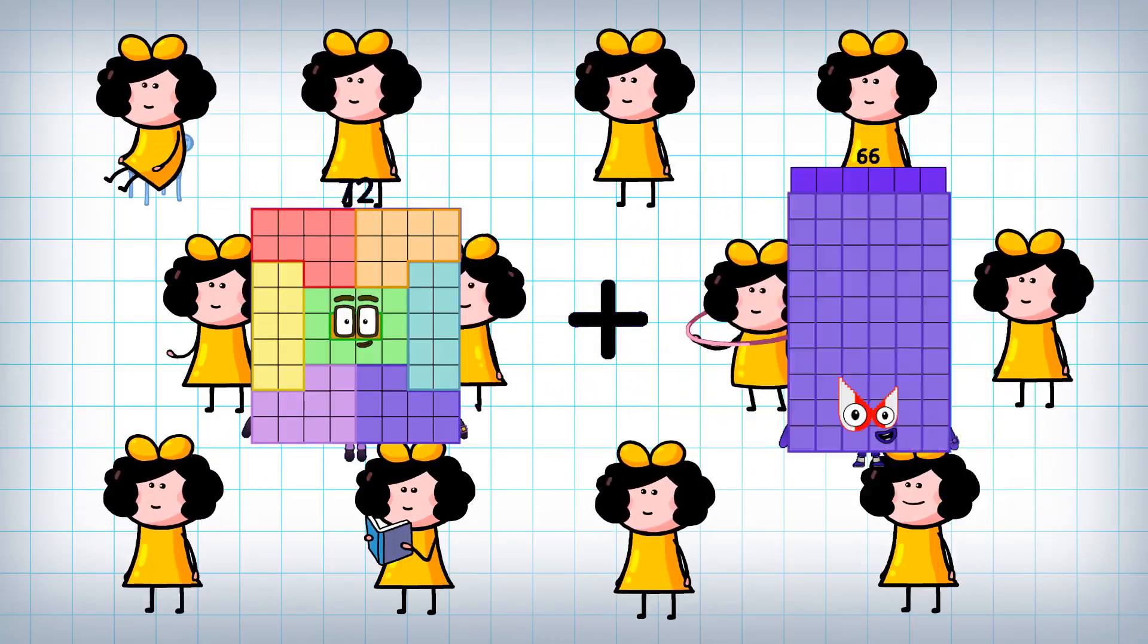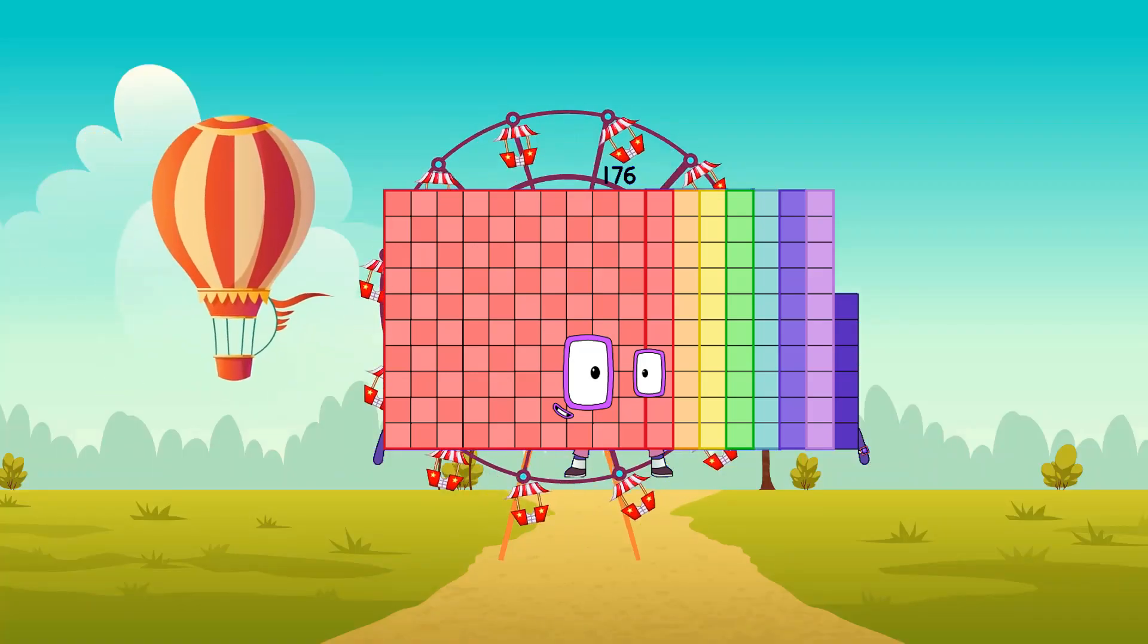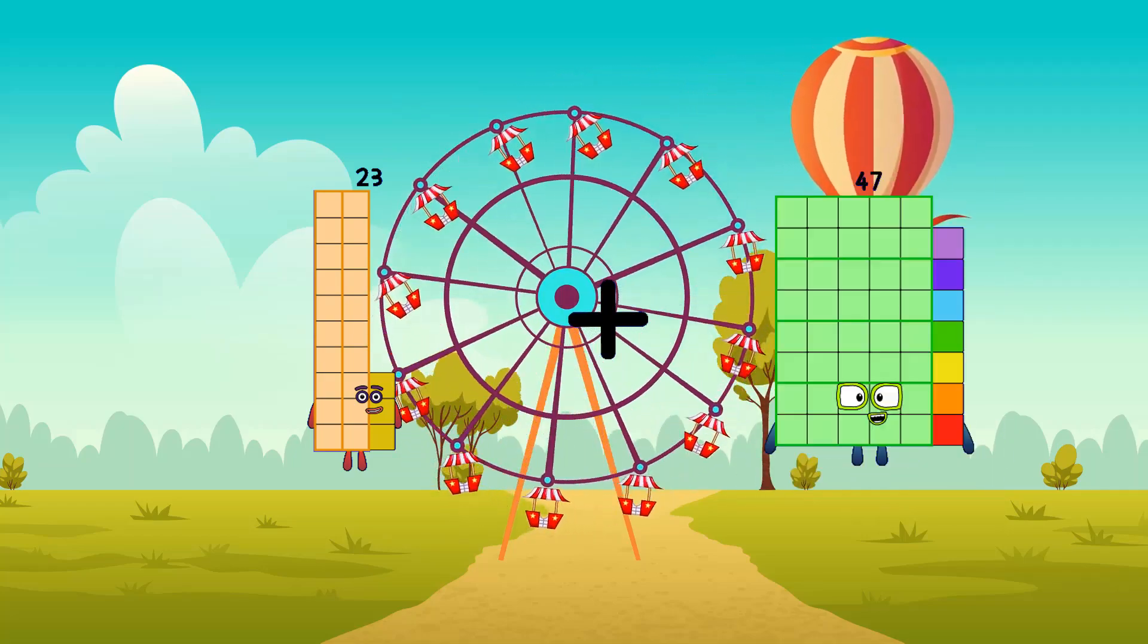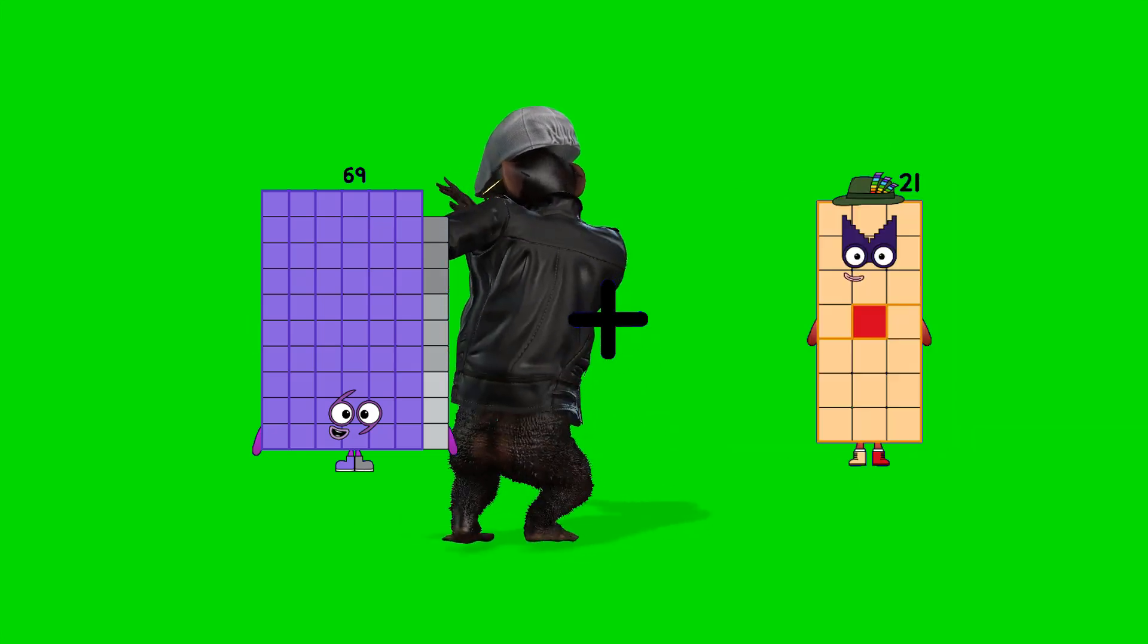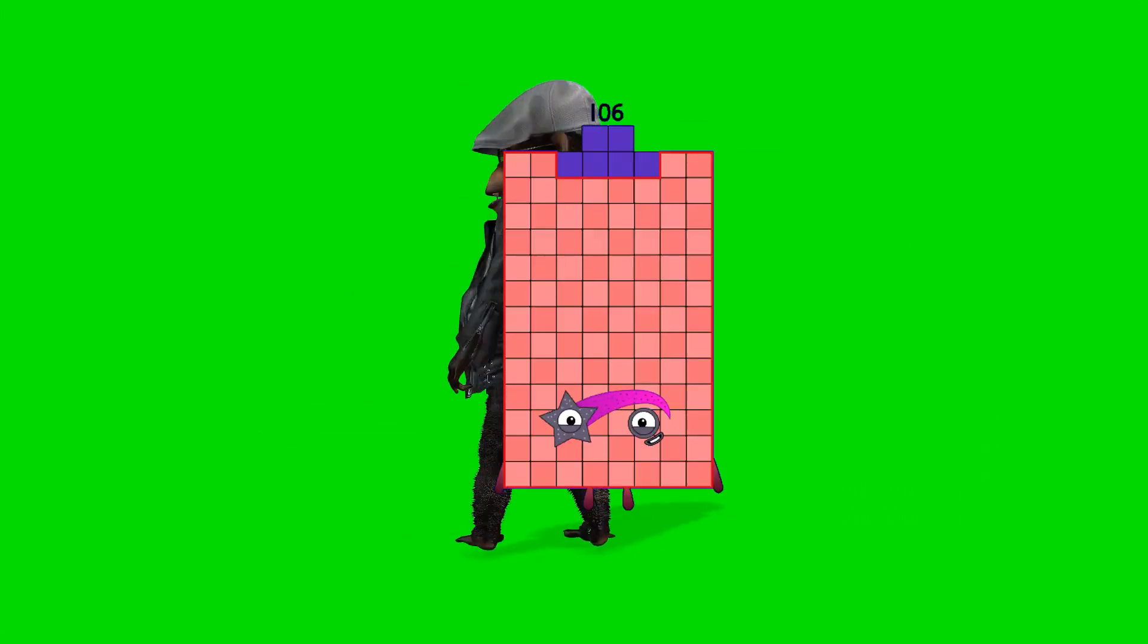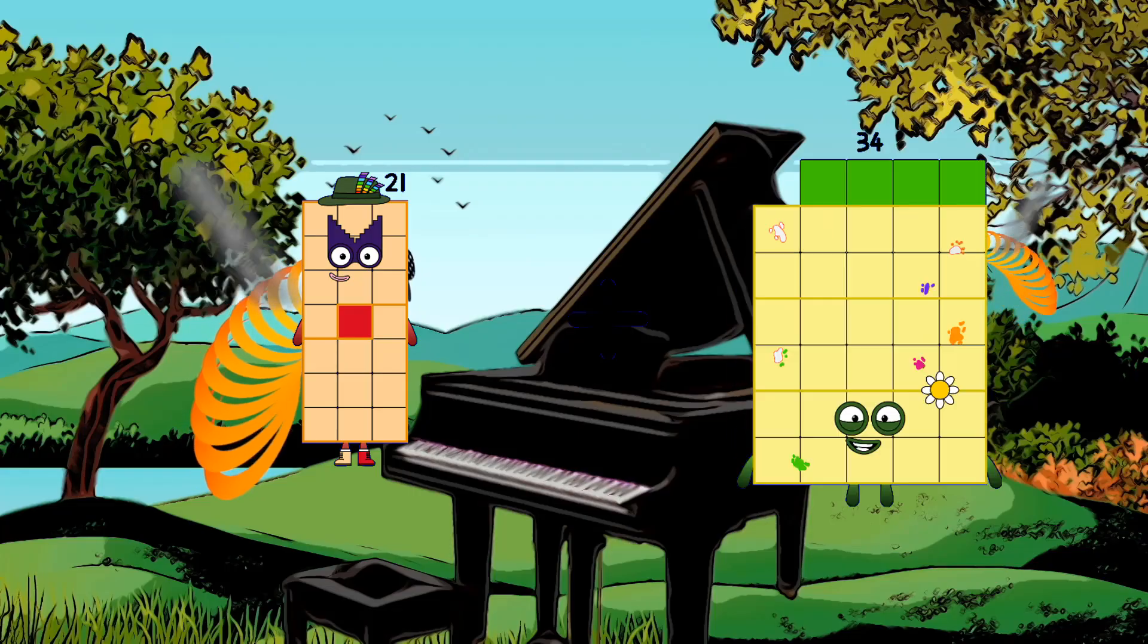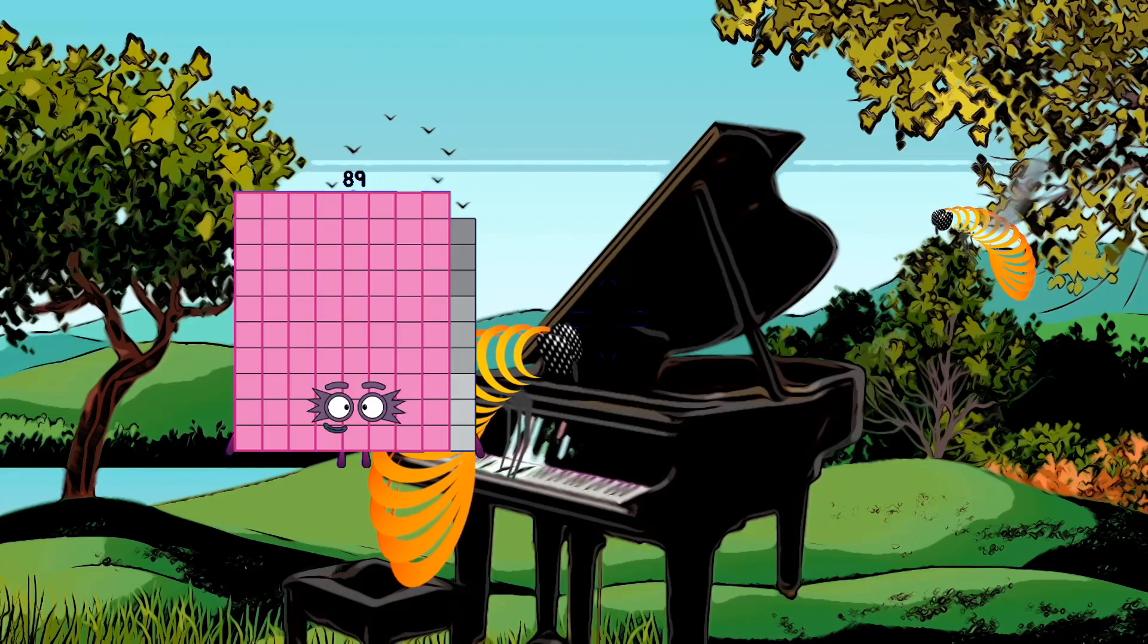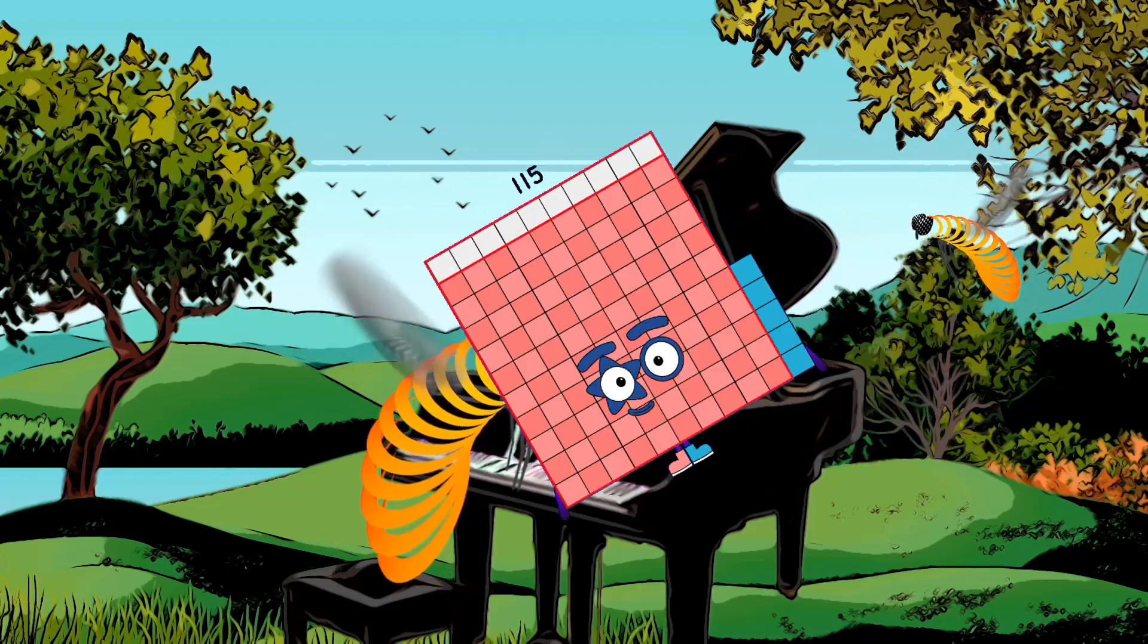72 plus 104 equals 176. 23 plus 93 equals 176. 69 plus 37 equals 106. 21 plus 89 equals 110. 31 plus 84 equals 115.